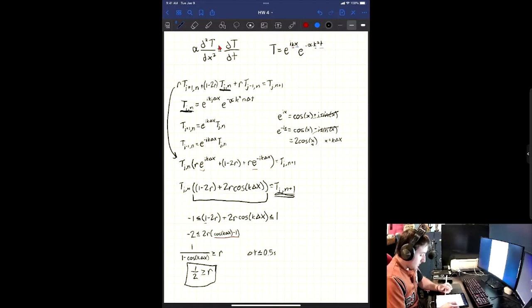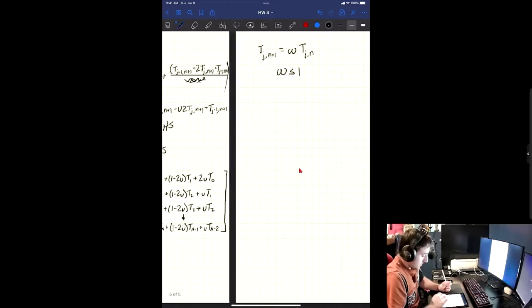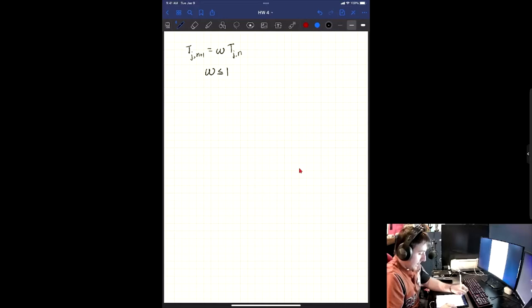It's very similar how we did this method, how we want this middle term here for the explicit differential equation. We wanted this to be less than 1, so that our T of J to the N plus 1 didn't shoot off to infinity or negative infinity. And so that's why it gave us this R here to be less than or equal to 1 half. So we can do a similar thing, but instead of R, we're going to be using U.